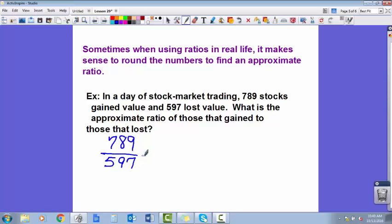You would round them off to give them a better idea. So let's round 789 to 800 and 597 to 600. And then if you reduce those, obviously you can reduce by 100 and then you could reduce those by 2. So it actually ends up being a 4 to 3 ratio.